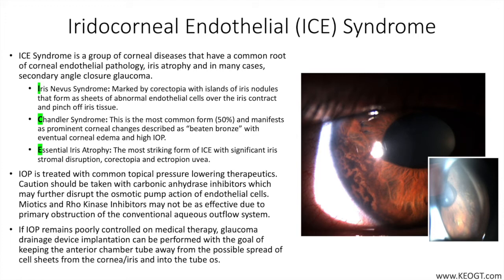Chandler syndrome is the most common form, representing 50% of cases, and manifests as prominent corneal changes described as beaten bronze, with eventual corneal edema and high IOP. Essential iris atrophy is the most striking form of ICE syndrome, with significant iris stromal disruption, correctopia, and ectropion uvae.